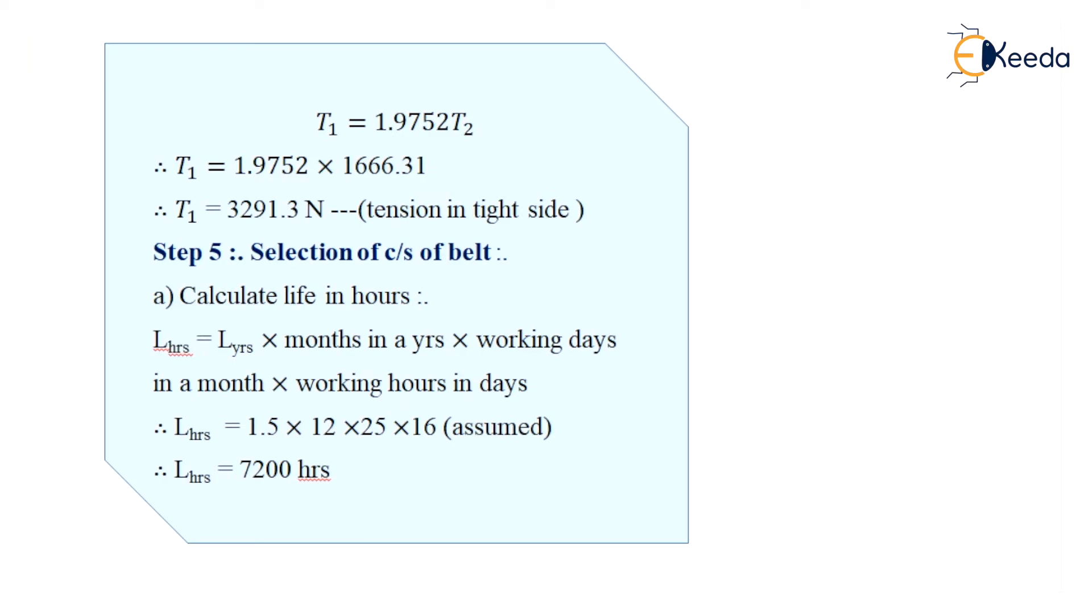Next step is to find the cross section of the belt. Before that let's calculate the life in hours. The formula for life in hours is given as life in years multiplied by months in a year, multiplied by working days in a month, multiplied by working hours in a day. So in this case, life in years is given as 1.5, months are 12 in a year, working days is assumed to be 25, and working hours in a day is considered as 16. So from this, I can get the answer for life in hours as 7200 hours.